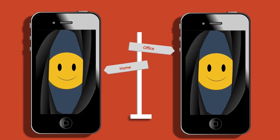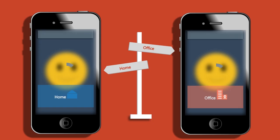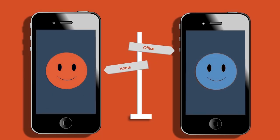Further, the invention automatically applies image alteration effects based on the location of the device. For example, at home, a red color is overlaid on the photo, and at the office, a blue color is overlaid on the photo.